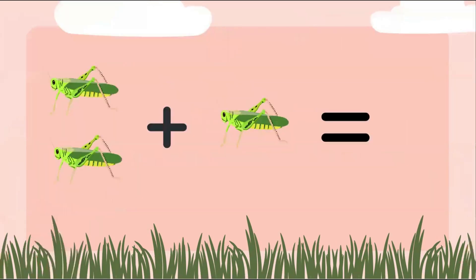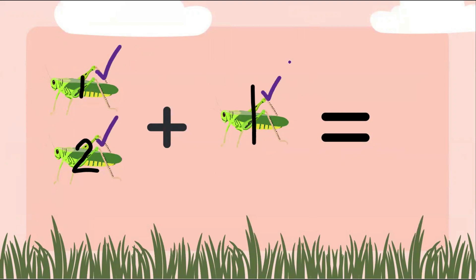We're going to take a look at some bugs today. Here I have two bugs plus one bug, and I want to find the total amount of bugs. Let's count the first group — we have one and two. Now we add these two bugs to their new friend, which is one. Let's count them all together: one, two, three. So two plus one gives us a total of three bugs.